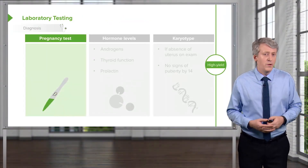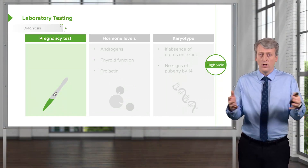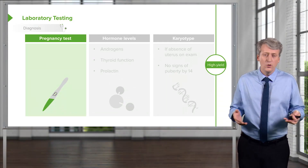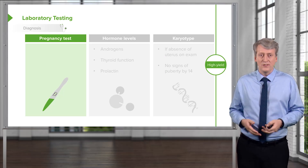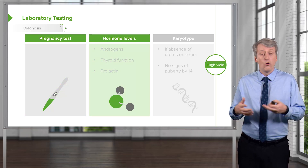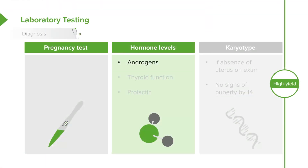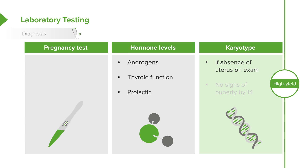For lab tests, a pregnancy test is always indicated — it's easy, cheap, and unlikely to be the cause, but you'd hate to miss it. We'll check hormone levels including androgens, thyroid function, and prolactin, addressing the HPO axis, thyroid gland, and pituitary. A karyotype is indicated if we suspect a problem with Müllerian system development — for example, if the patient has an abnormal uterus or no signs of puberty by age 14.